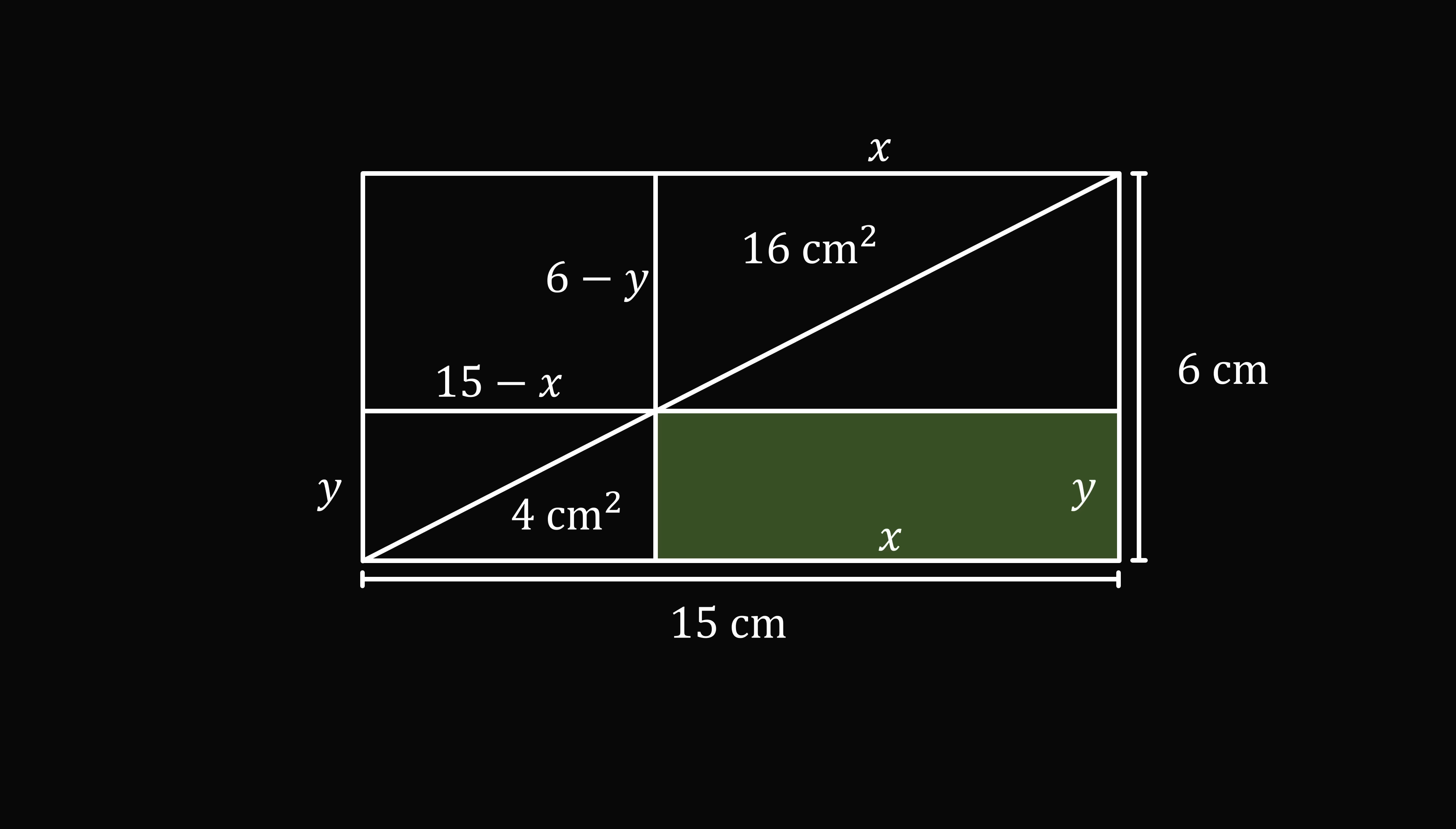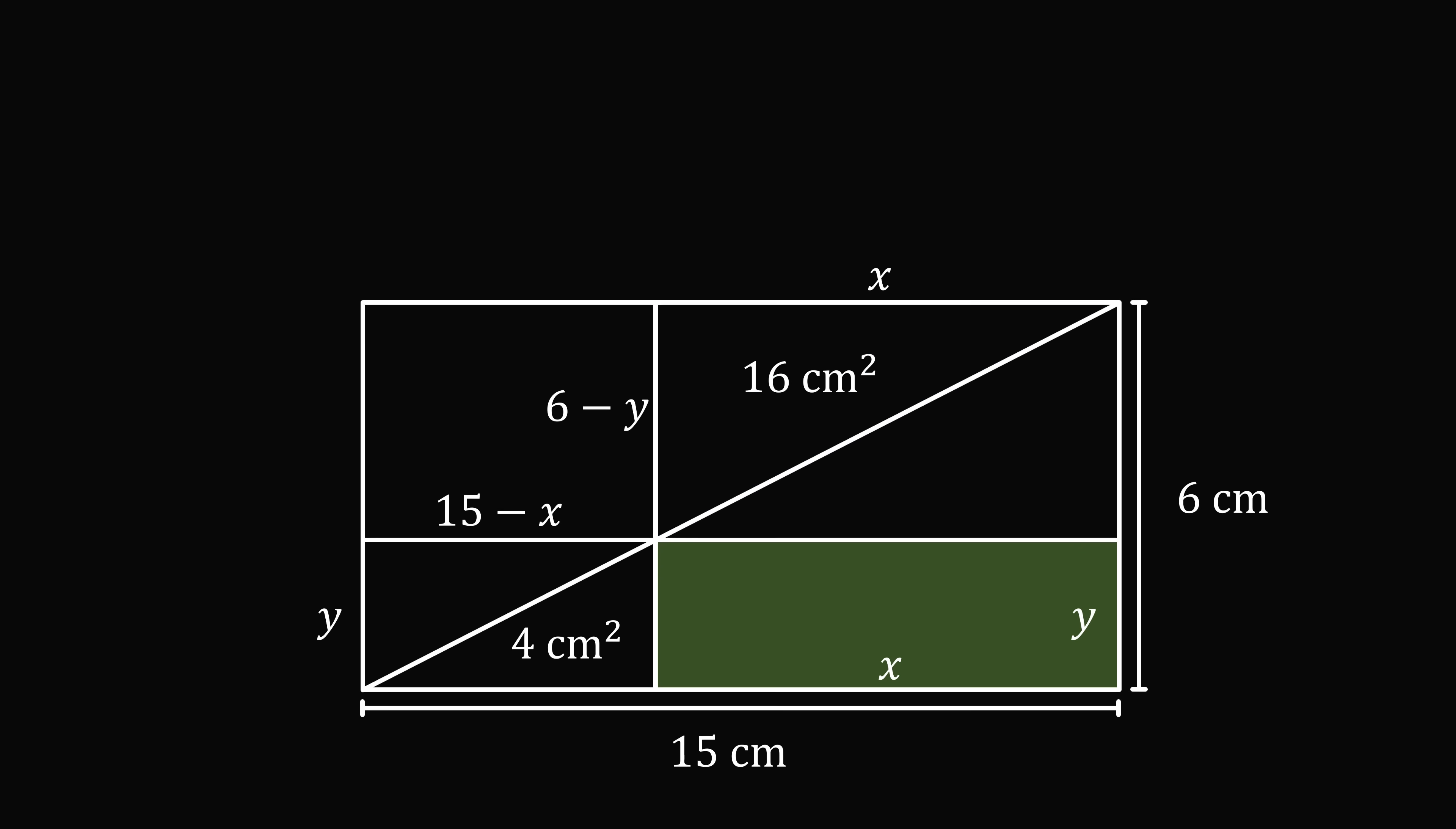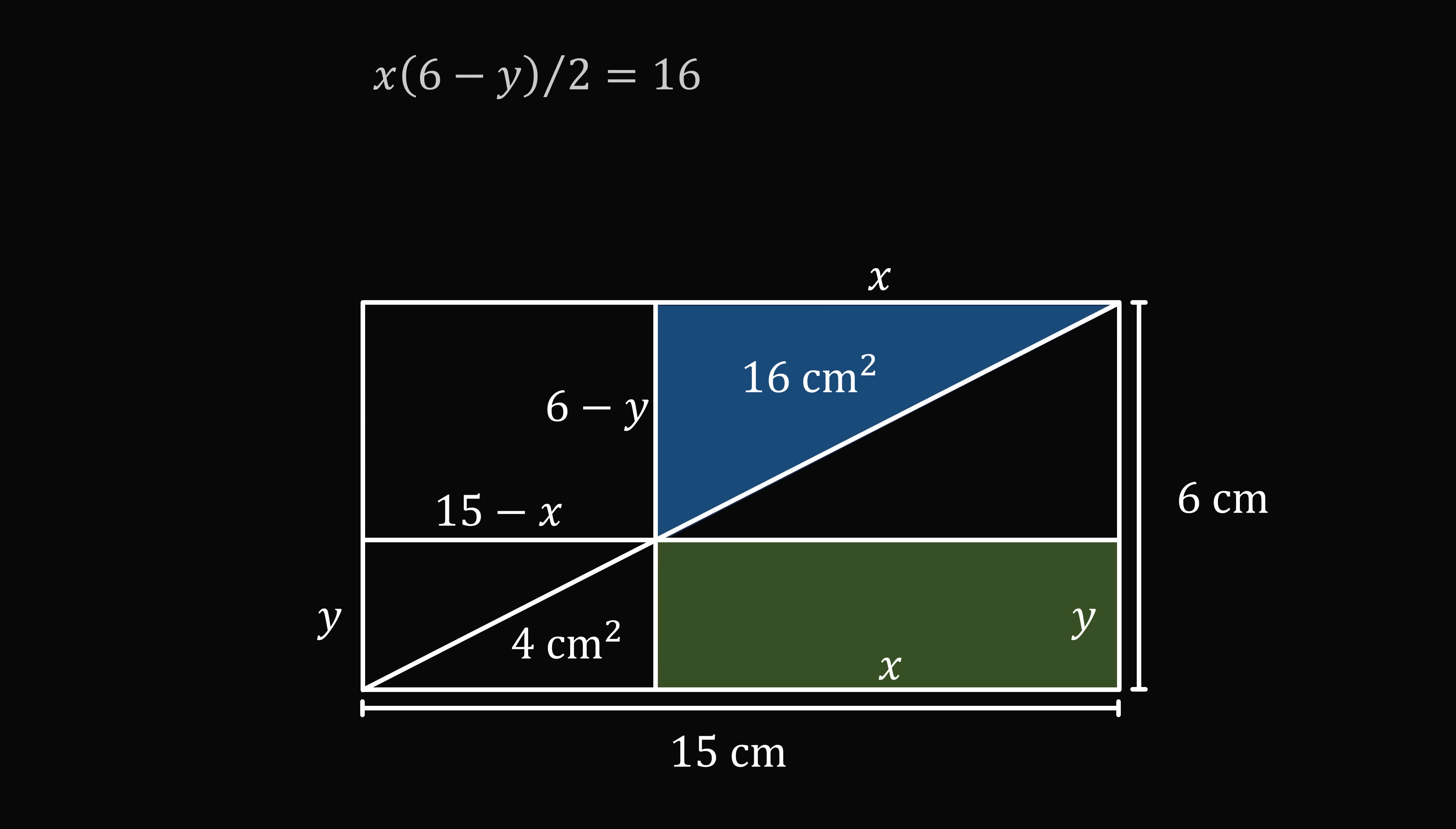So let's calculate the areas of these triangles in terms of x and y. In this upper triangle, we will have x multiplied by 6 minus y all over 2 is equal to 16. We can multiply both sides by 2 to get x multiplied by 6 minus y is equal to 32. The other triangle has dimensions of y and 15 minus x. So we have y multiplied by 15 minus x all over 2 is equal to 4. Multiplying both sides by 2, we get y multiplied by 15 minus x is equal to 8.